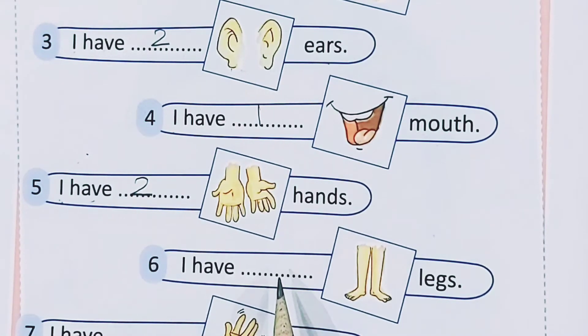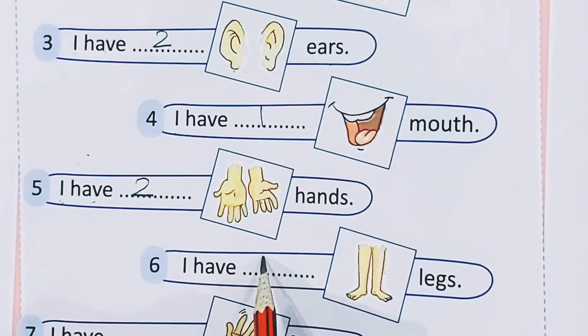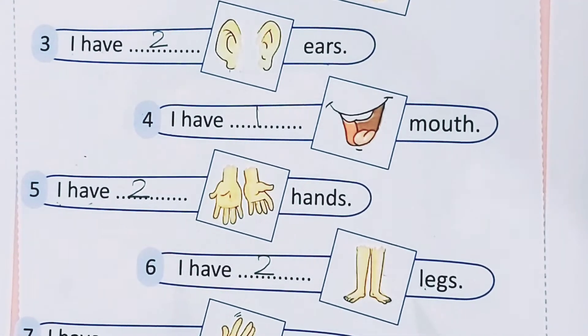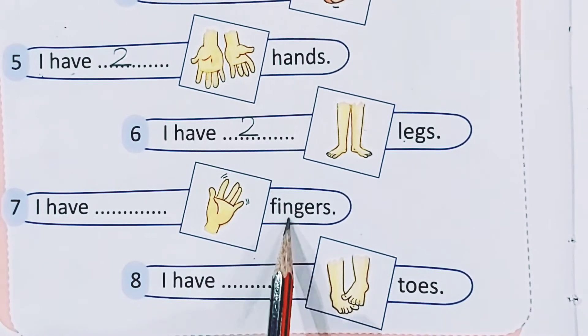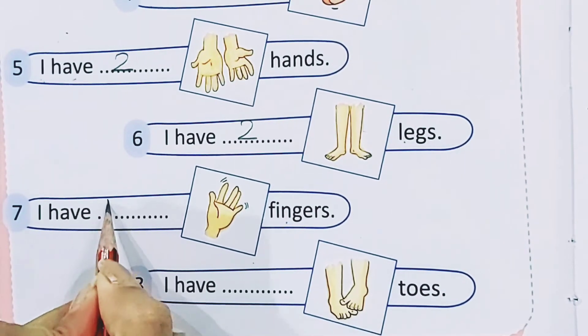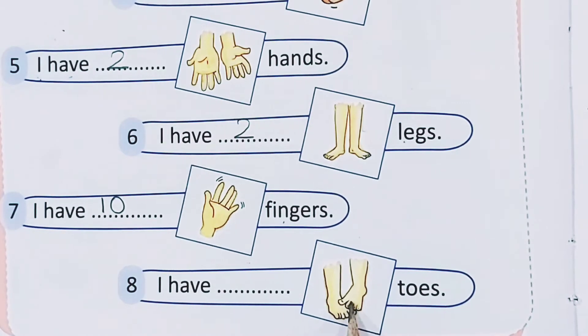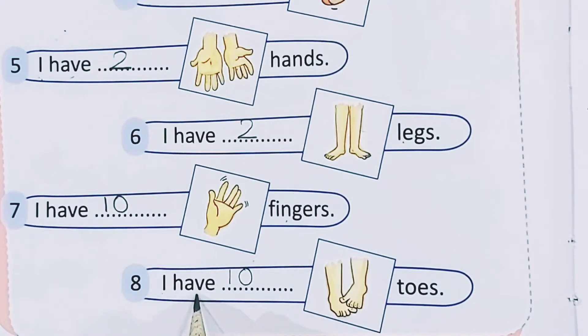Children, tell me, how many legs do we have? We have two legs. One, two. So, we will write here number 2. Now, children, I have dash fingers. How many fingers do we have, children? Yes, you are right. We have 10 fingers. And, how many toes do we have? We have 10 toes. So, we will write number 10. I have 10 toes.